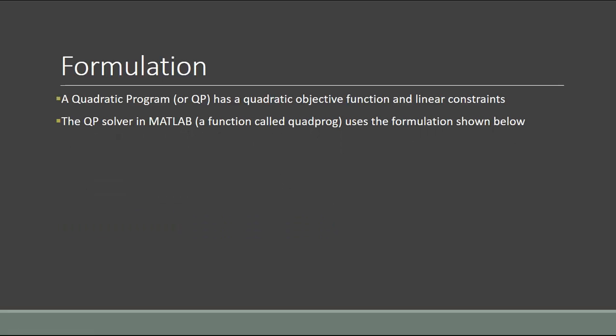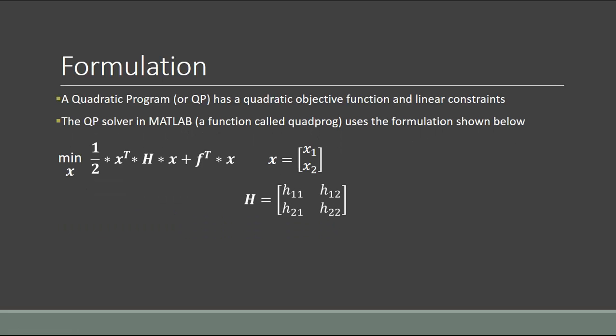The QP solver in MATLAB is a function called quadprog, and it uses a specific formulation. Our objective function has to be in this form: we minimize one-half times x-transpose times H, where x is a vector of decision variables. H contains the constant coefficients multiplying the squared terms and the x1 times x2 terms. Then we have the linear terms, whose coefficients go into a vector called f, with f1 and f2 multiplying the purely linear terms.